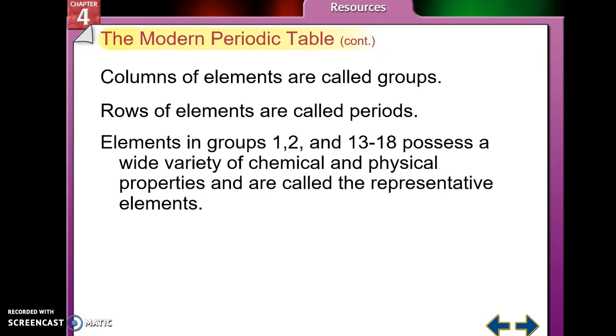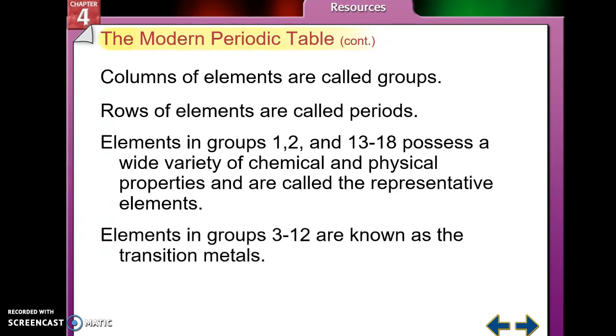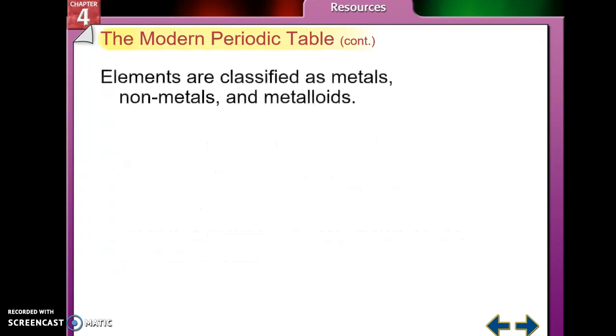Elements in groups one and two and 13 through 18 are very widespread in what they are capable of and their properties, and they are called representative elements. Those are the tall columns. Elements in groups three through 12, the short columns, are called the transition metals. And then you also have the lanthanides and the actinides that are down at the bottom. We call those inner transition metals.